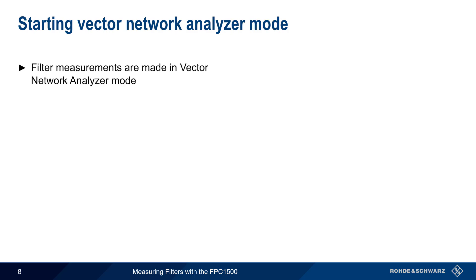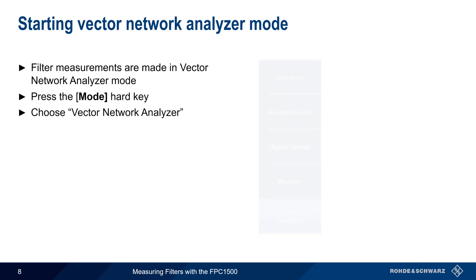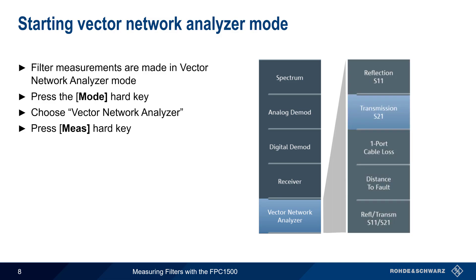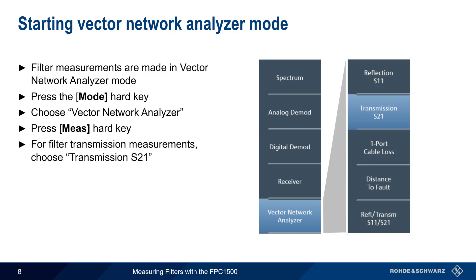Filter measurements on the FPC-1500 are made in Vector Network Analyzer mode. To enter this mode, press the Mode hard key on the front of the FPC and then choose Vector Network Analyzer. Next, press the Measure hard key and choose Transmission S21 for filter transmission measurements. We'll discuss reflection measurements later in this presentation.